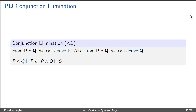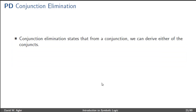To represent this more compactly, we can say P wedge Q entails P, as well as P wedge Q entails Q. Conjunction elimination essentially states that from a conjunction we can derive either one of the conjuncts, whichever conjunct we want, on a new line of the proof.